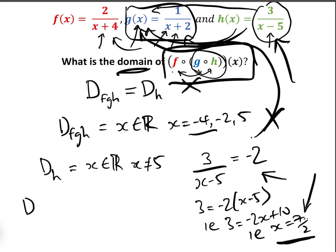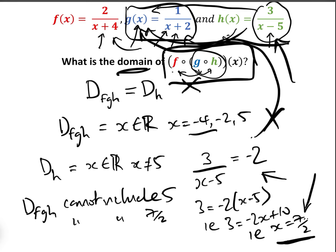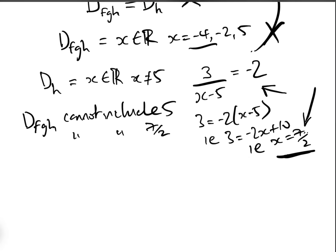So the domain of fgh cannot include five — that's the obvious one — and it also cannot include seven over two, because that causes a problem when we go into g. Now, what about when we put the composite g∘h(x) into f? The composite cannot have the value minus four, so we need to work out what g∘h(x) is.